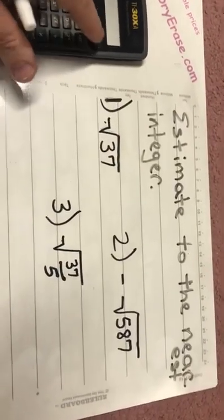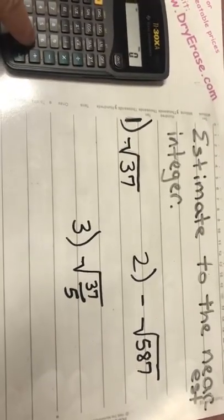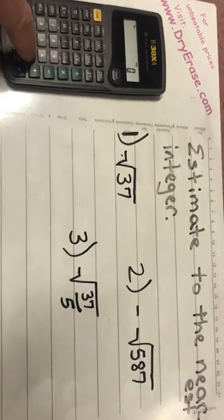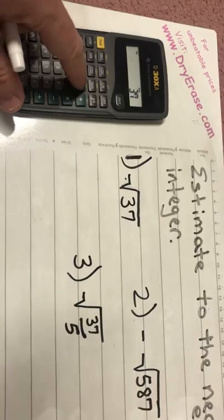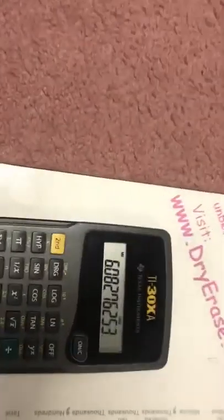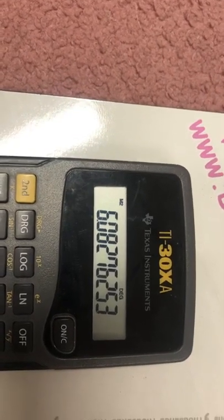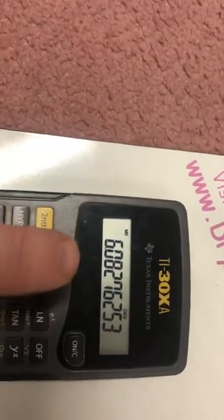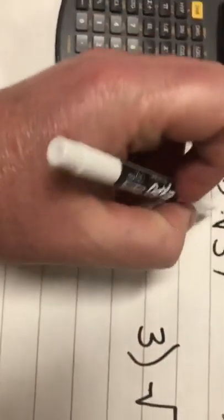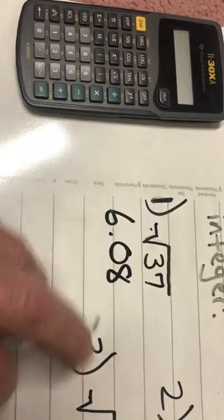I look at number one which is the square root of 37. So I'm gonna punch in 37 and I'm gonna punch in square root, and you can see that I get an answer of 6.08276253. Not a perfect square, not a terminating decimal, but I look and I see that I ended up with 6.08 and it went on.